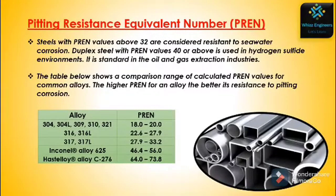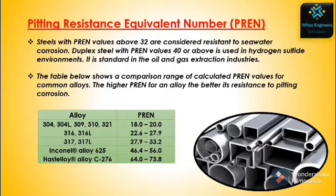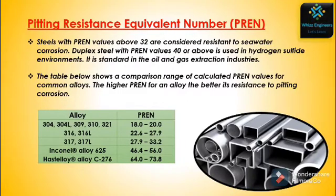The higher the PREN for an alloy, the better its resistance to pitting corrosion. Alloys 304, 304L, 309, 310, and 320N have a PREN range of 18–20; 316 and 316L range from 22.6 to 27.9; Alloy 33 is approximately 33.2; Alloy 625 ranges from 46.4 to 56; and Hastelloy C-276 ranges from 64 to 73.8.